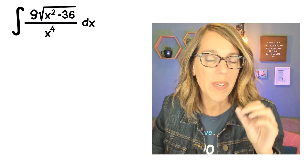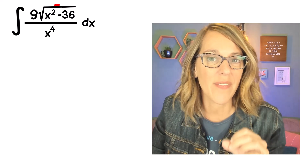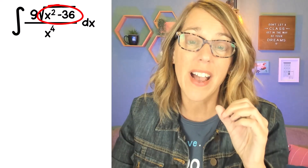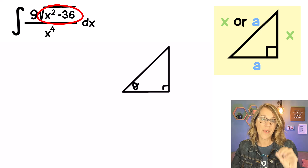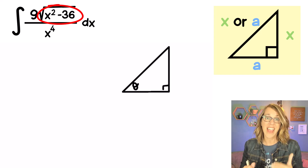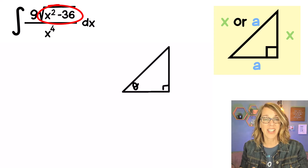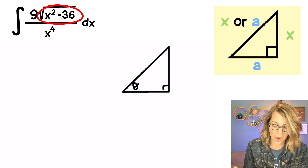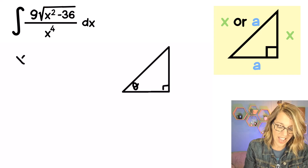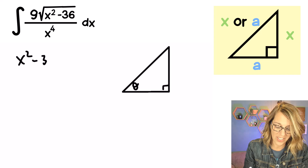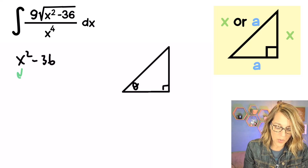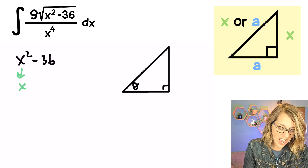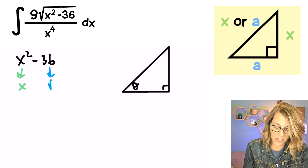I know that I want to use a trig sub because of x squared minus 36 — that difference of squares. To start this off, I want to really focus in on that x squared minus 36 so we can label our right triangle. This is my difference of squares. What was squared was the x, and the square root of 36 is six.